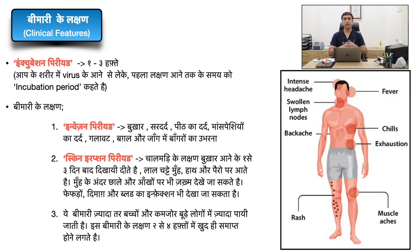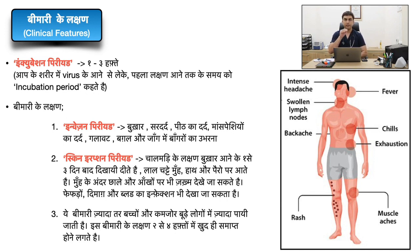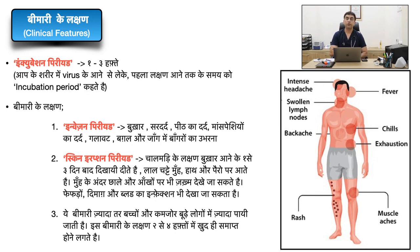The third period is the skin eruption period, where small rashes appear — usually on the extremities, face, and trunk. These rashes go through four types of lesions: macules (flat red rashes), papules (raised rashes), vesicles (fluid-filled cavities), and pustules. Ulcers can also appear in the mouth, cornea, and eyes, which can cause pain and affect vision.